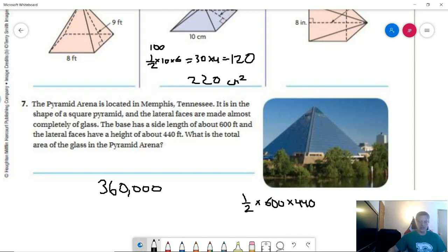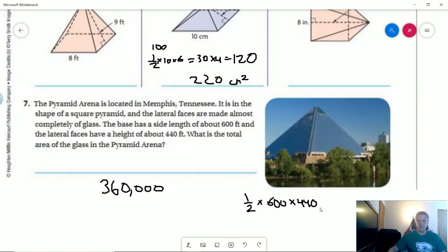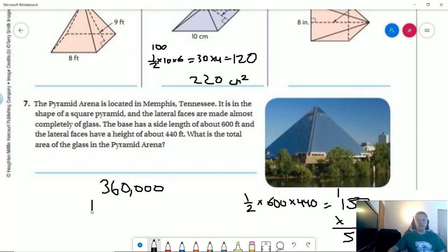So the 600 times 440 part gives us 264,000. And then if we cut that in half, it should be 132,000. So now I'm going to have one of these and four of these. And so that is going to give me 528,000 plus 360,000, so that should be 888,000 square feet.